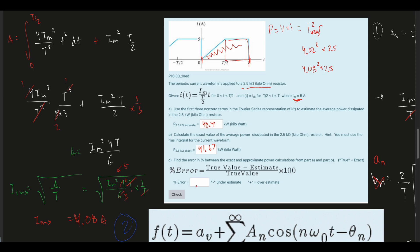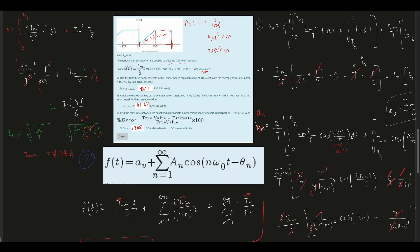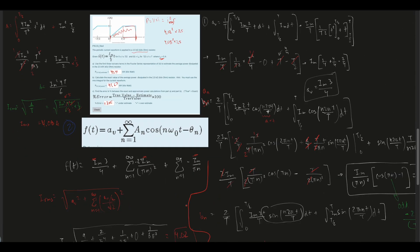To calculate percent error, we take (true value − estimate) / true value × 100 = (41.67 − 40.41) / 41.67 × 100 ≈ +3.05%. So our estimate is an overestimate with about 3.05% error. That's how you solve this problem.